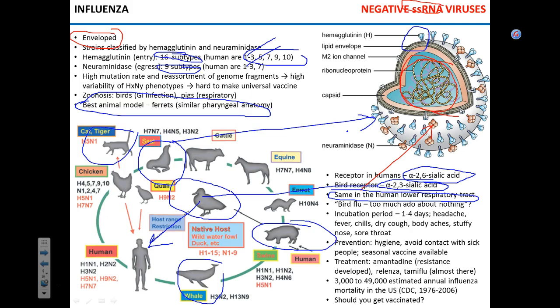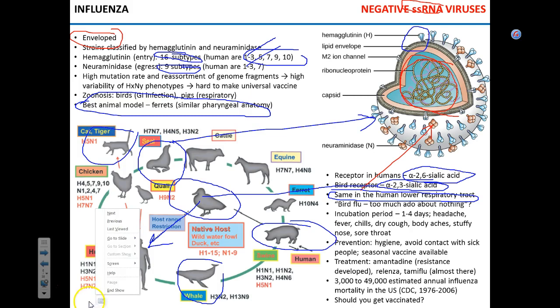What about the swine flu? In 2009 the virus changed, which brings us to viral changes. There are two terms to know: antigenic drift, which is a slow, gradual accumulation of mutations in the viral genome — the word 'drift' describes slow movement, and that's exactly what this is: a slow, gradual change.